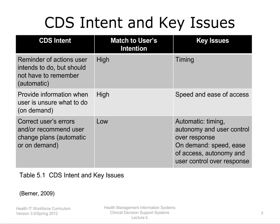The third CDS intent is to correct users' errors and/or recommend a user change plans, and could be either an automatic or on-demand intervention. For an automatic intervention, key issues are timing, autonomy, and user control over the response. For an on-demand intervention, they are speed, ease of access, autonomy, and user control. Users balance the desire for autonomy with other demands such as improving patient safety or decreasing practice costs.